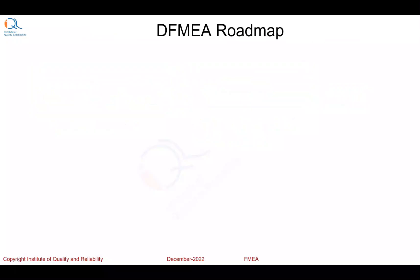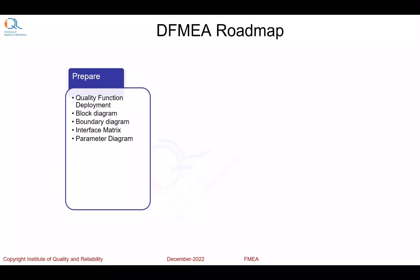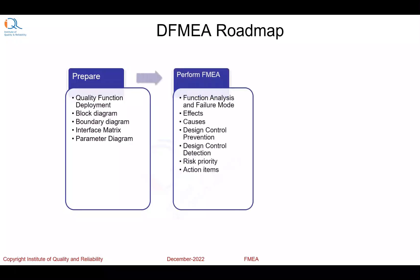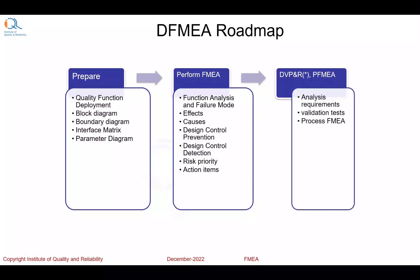We can also visualize the design FMEA roadmap in three stages. The first is preparation, where we get input from quality function deployment, block diagram, boundary diagram, interface matrix, and parameter diagram. Then we go to performing the FMEA, wherein we perform function analysis and failure mode listing, estimate severity rankings, identify causes and mechanisms, design control prevention, design control detection, and risk priority. Finally, action items emerge from the FMEA, leading to DVP&R — Design Validation Plan and Report — and process FMEA.